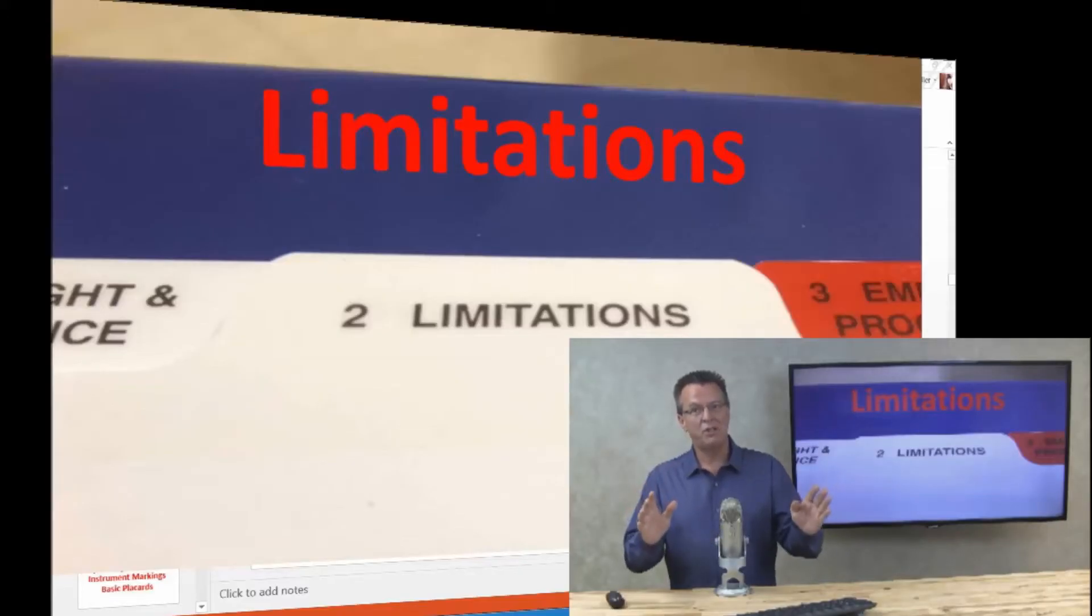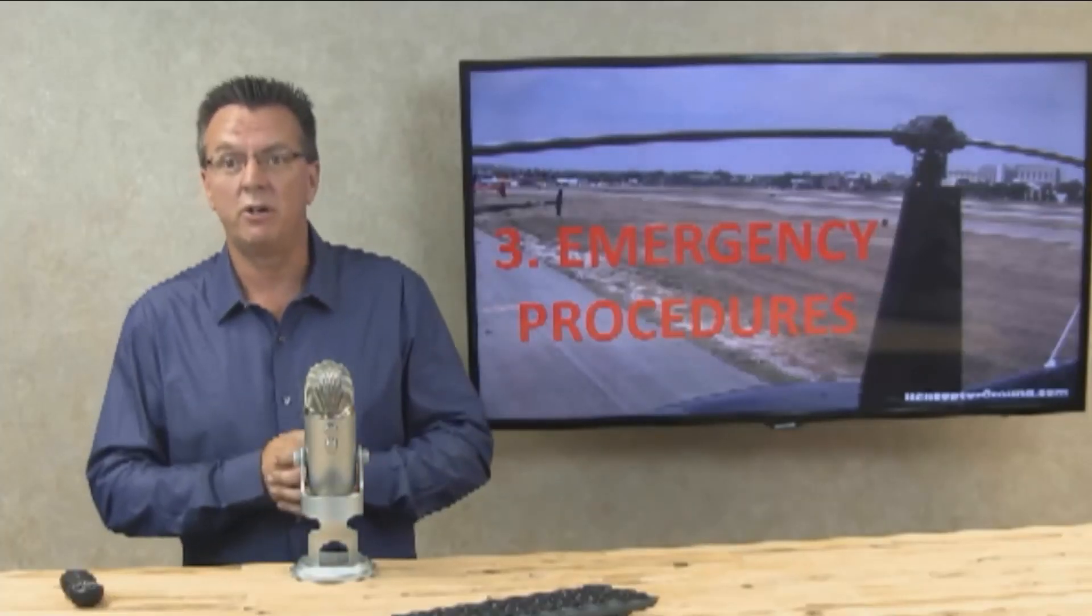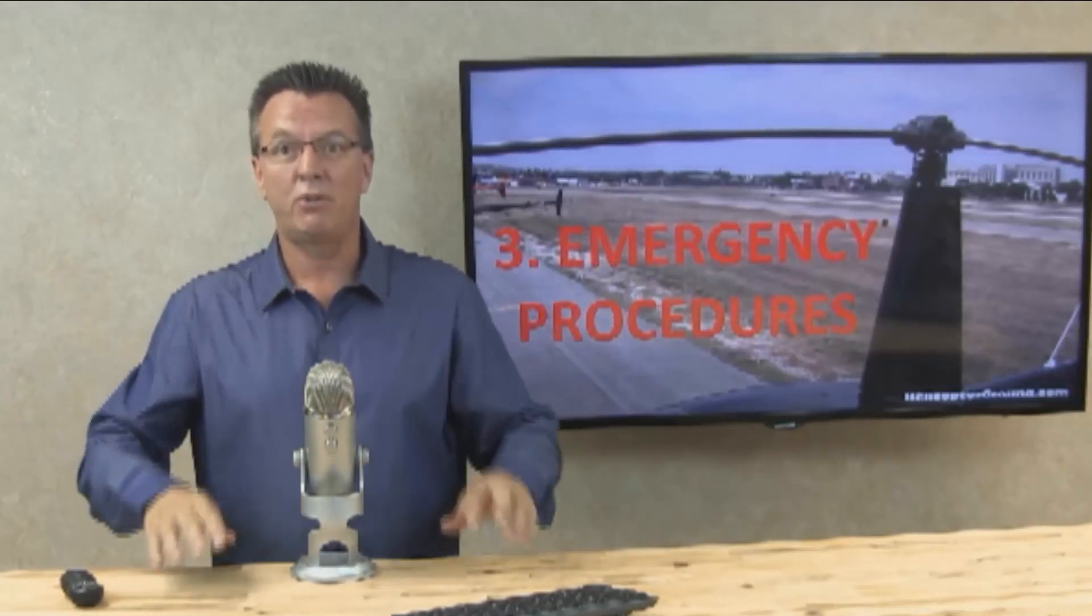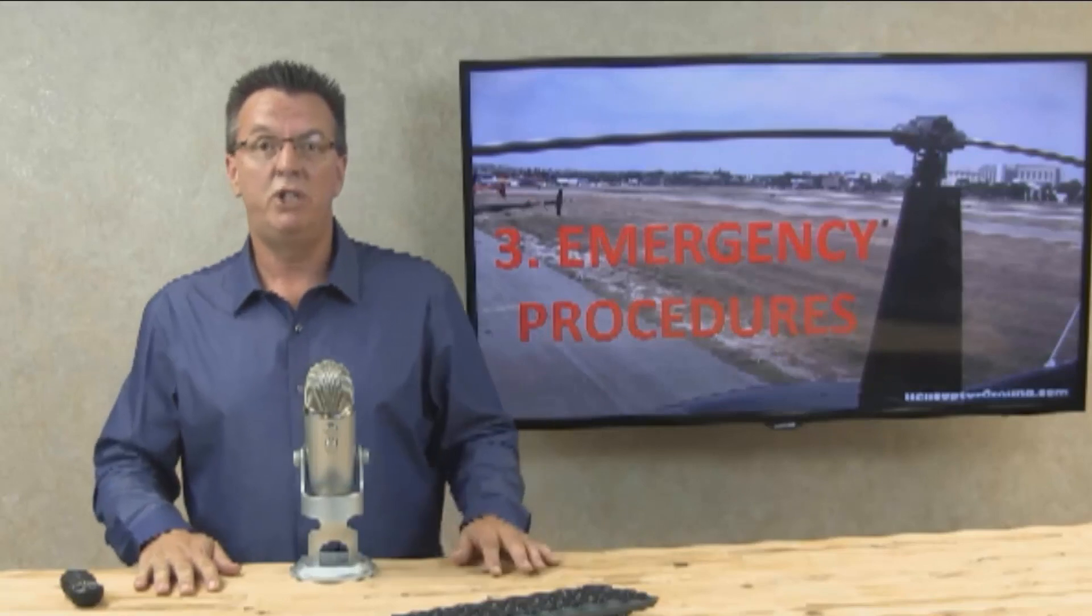So again, be very familiar with the limitations section. Know it's chapter two. Don't be afraid to go there and look things up. Don't be afraid to refresh these in your memory anytime you need to. Anytime I go somewhere to fly an aircraft that I haven't been in a while, I swear I always grab the POH and I go through and I review limitations and I review emergencies every single time for every aircraft that I fly. So next up is emergency section. Any questions about limitations? Put them in the box below. Somebody else probably has the same question. So we'll see you in the emergency section.